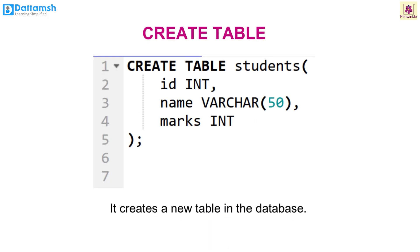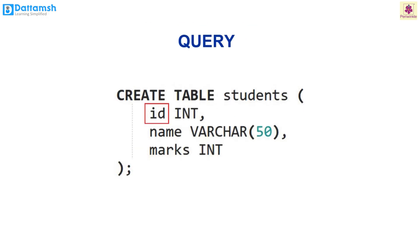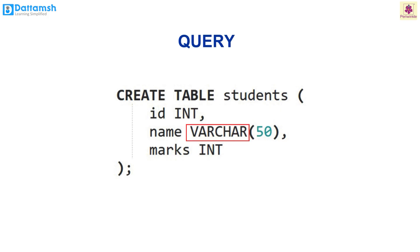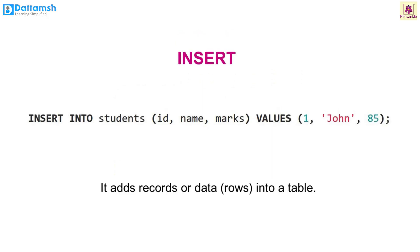Now let's learn about some basic SQL queries. CREATE TABLE: this creates a new table called 'students' with three columns — id, name, and marks. The id and marks columns are of integer data type (INT), holding the student identification number and marks respectively. The name column is of variable character data type VARCHAR; VARCHAR(50) means name can hold up to 50 characters.